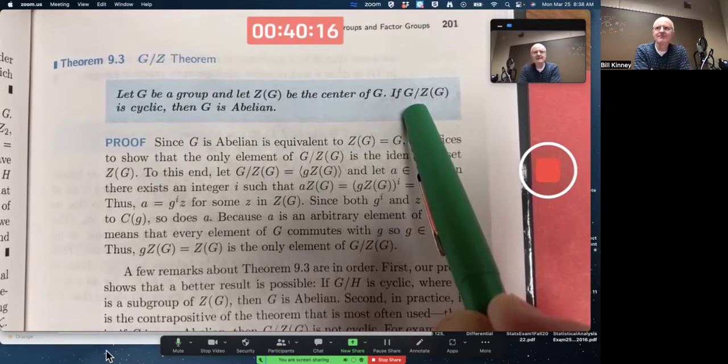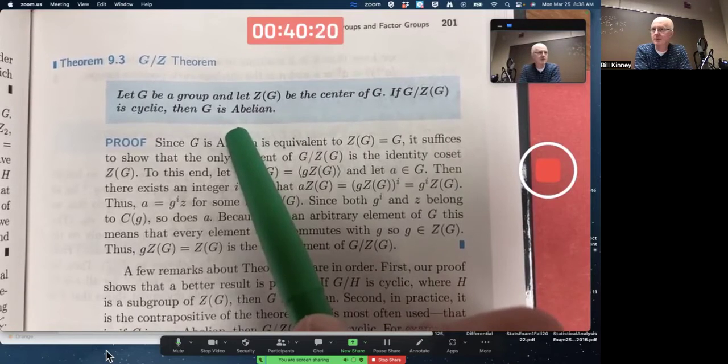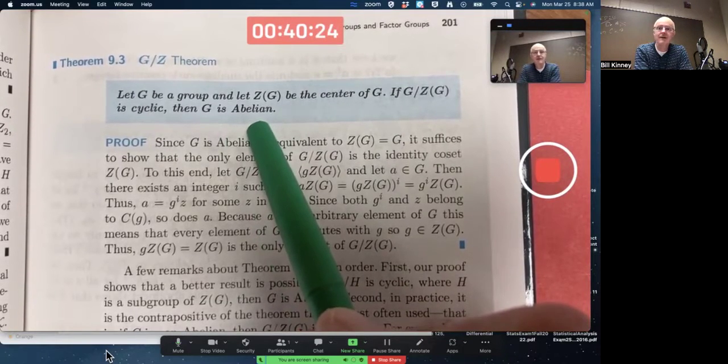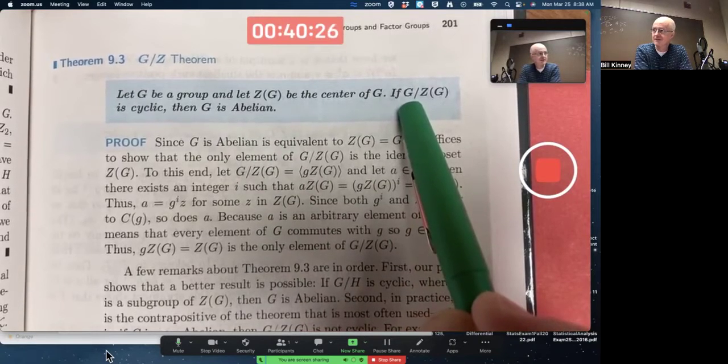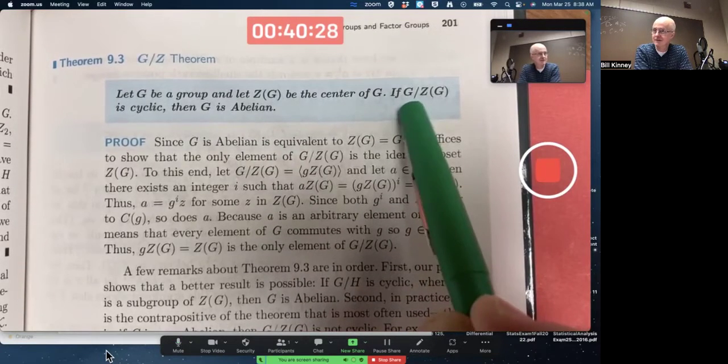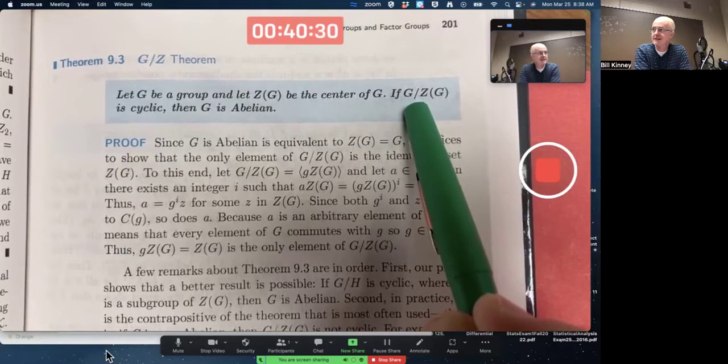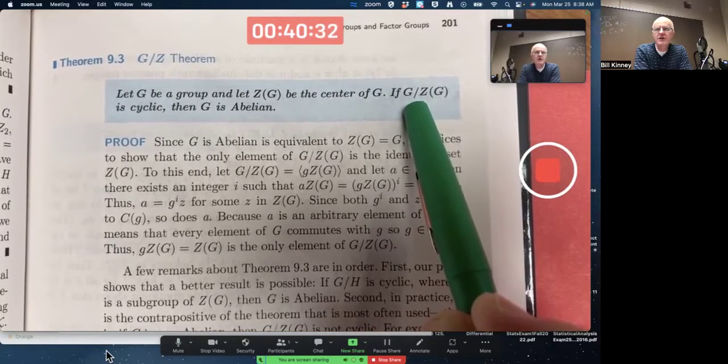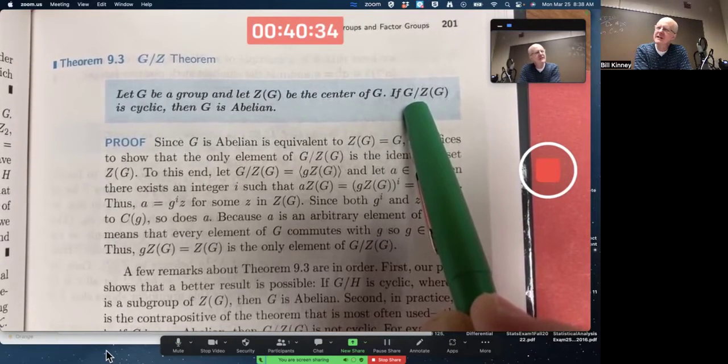The author does emphasize most commonly this is used in the form of its contrapositive. If G is not abelian, then the factor group is not cyclic. This particular factor group of G by its center.